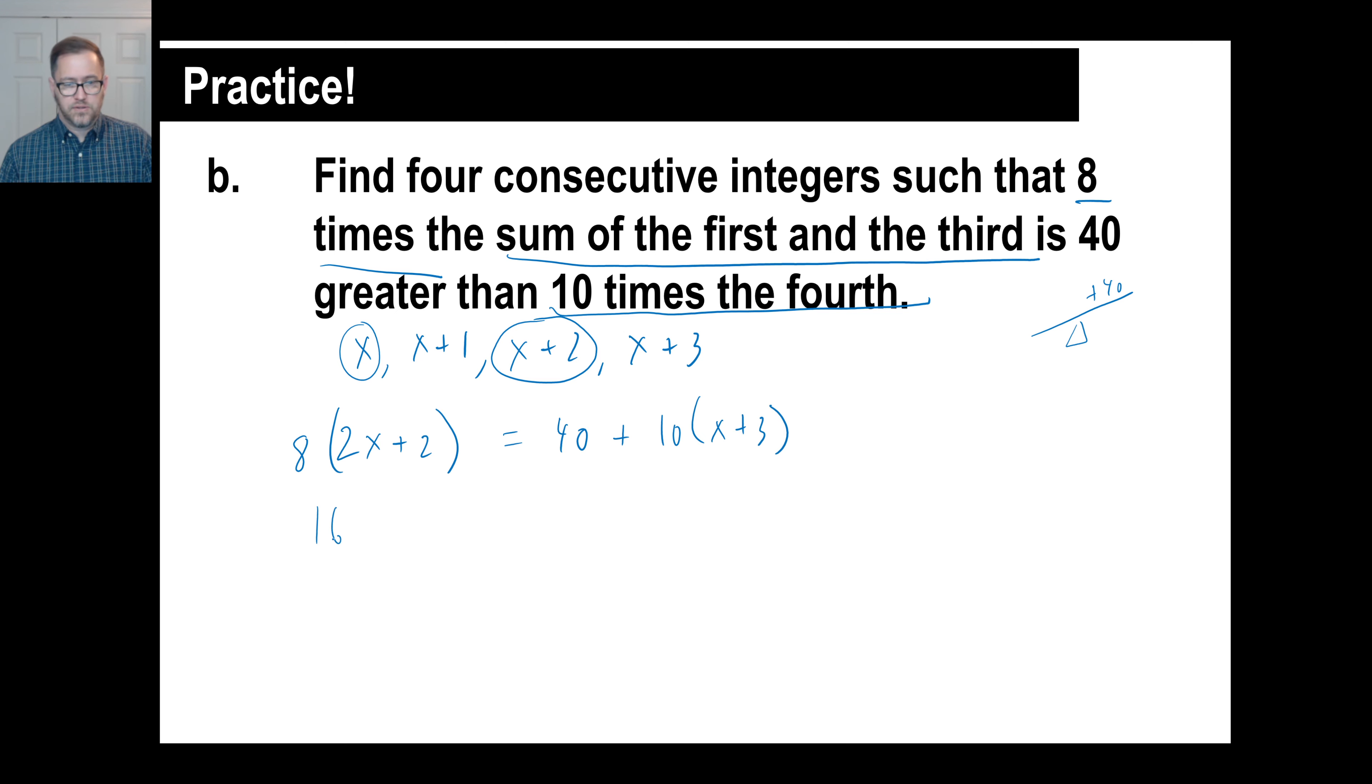So, 8 times 2x is 16x. 8 times 2 is 16. 40 plus 10 times x plus 10 times 3. I'm going to go 40 plus 30 is, I'll just call it 70. And then I'm going to go 10x. I'm going to pull this over to the left side. That'll give me 6x. And then the 16 I will pull over here. That'll be 70 minus 16, which is 54. Then x will be 9.